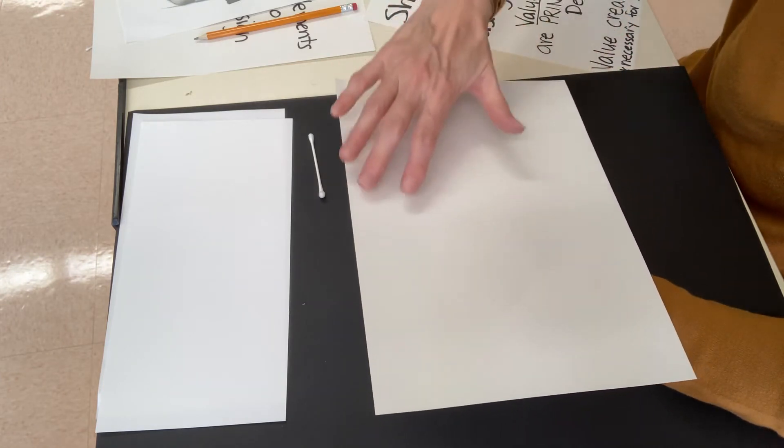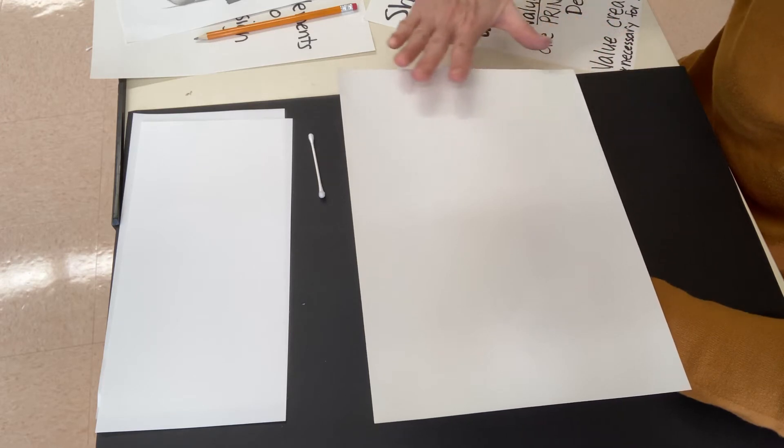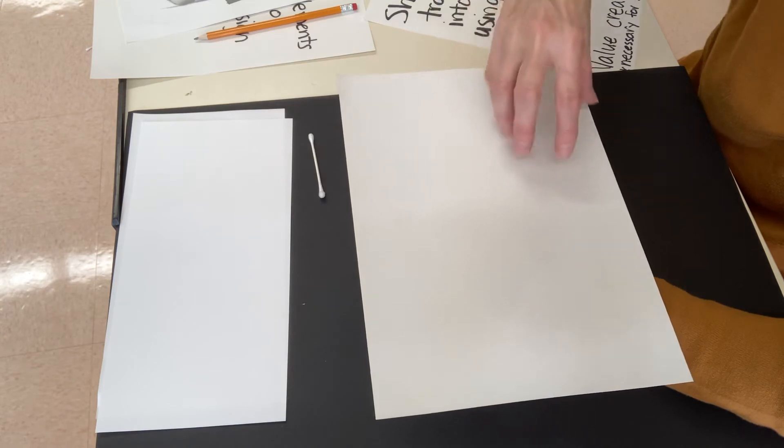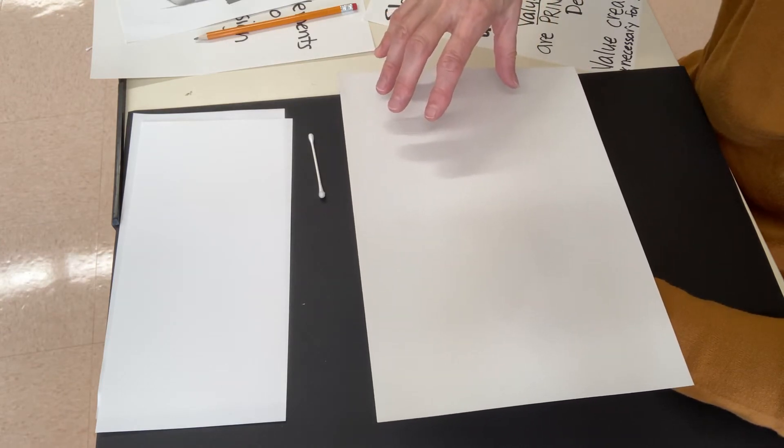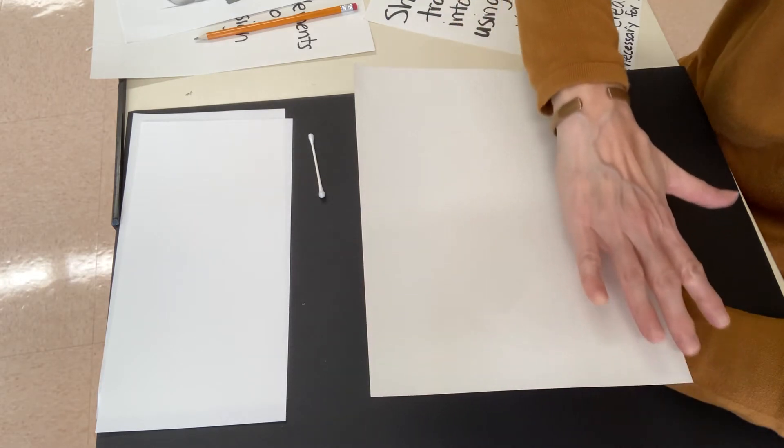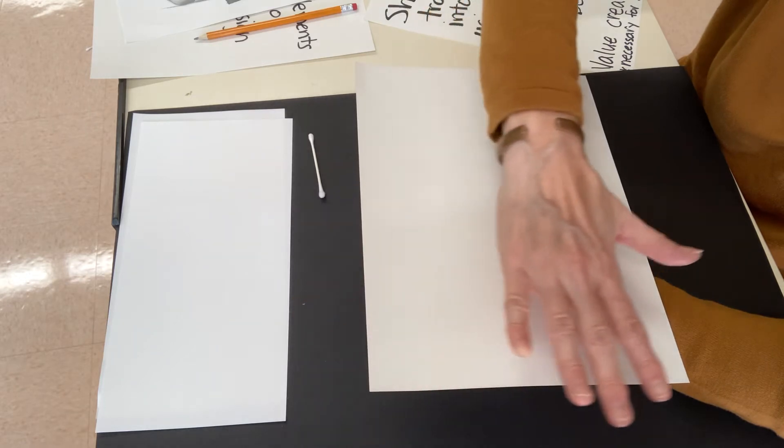So the design that you create has to go from edge to edge. It can't just be floating in the middle or to one side of the paper. This flat surface is called the picture plane and you'll be using the entire 100% of the paper.